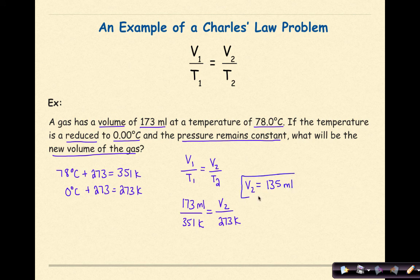Now the question is, does this make sense? My temperature went from 351 Kelvin and decreased to 273 Kelvin. In the same respect, my volume should also decrease. So I started at a volume of 173 milliliters. That means my volume should be smaller, and I find for V2 that my volume is smaller at 135 milliliters. This is one example of a Charles' Law problem.